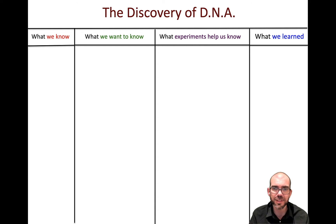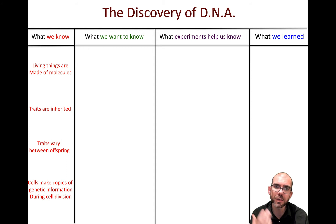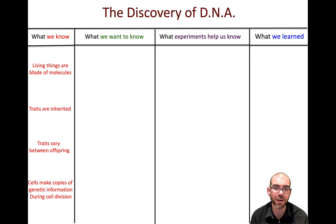For this lesson, think that we only knew the following. We knew that living things are made up of molecules — the big four macromolecules: carbohydrates, lipids, proteins, and nucleic acids. We knew that traits are inherited, that something is passed down from parents to their children, and that offspring vary in their traits.